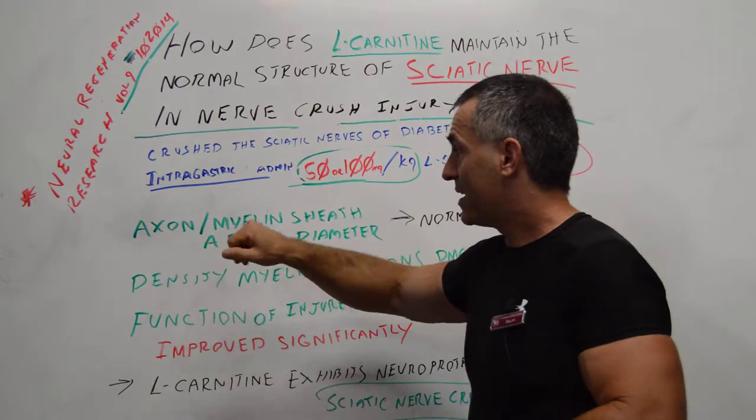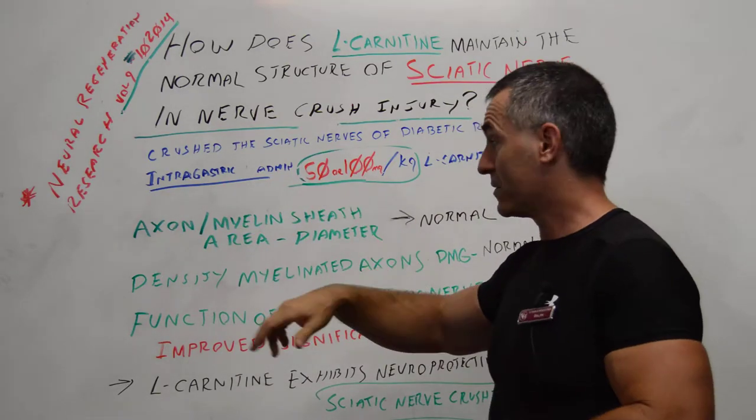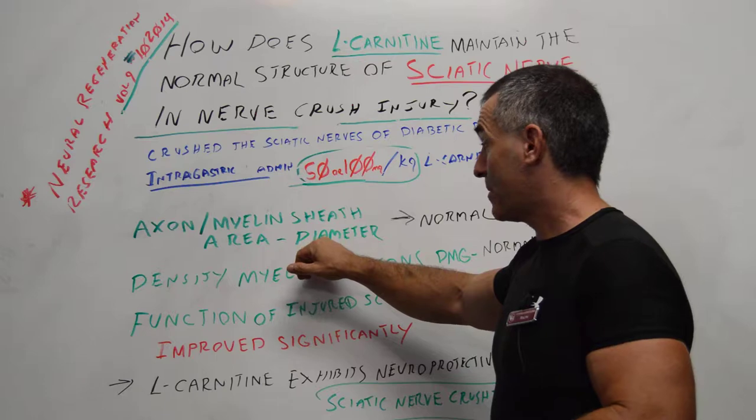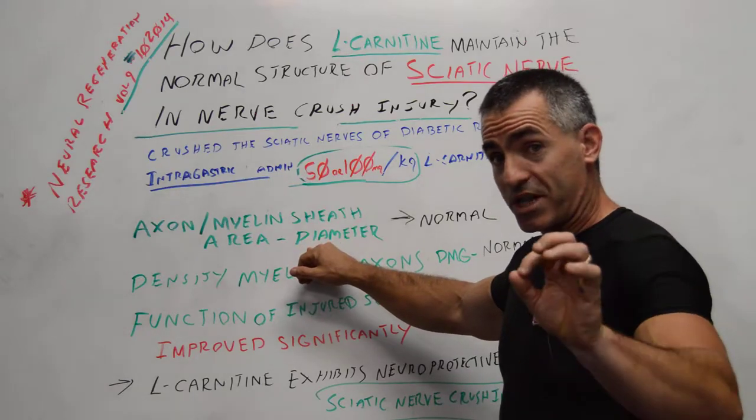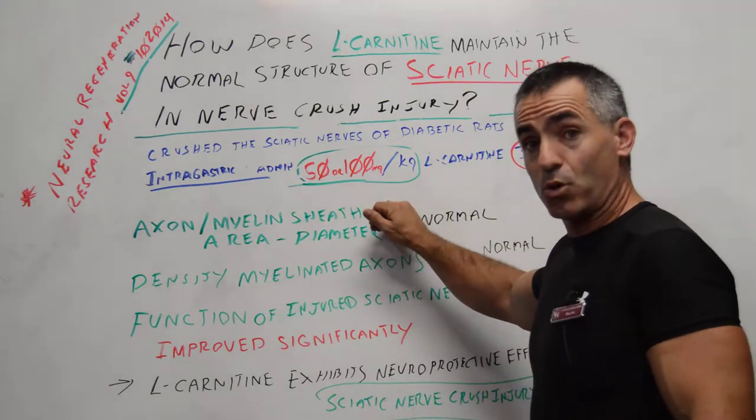The axon and the myelin sheath, the little insulation around the nerves, area in diameter after it was crushed, we're talking the injury site, returned to similar to normal.